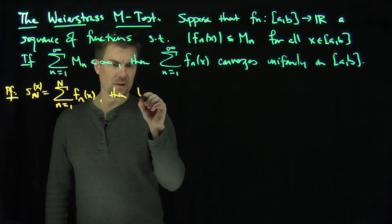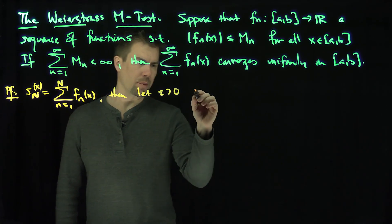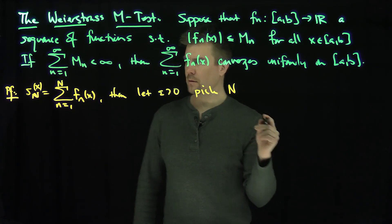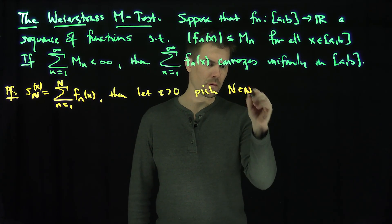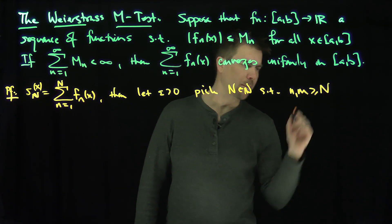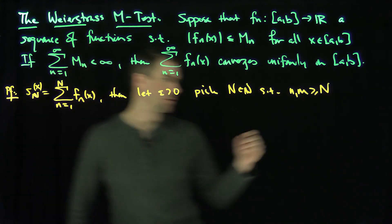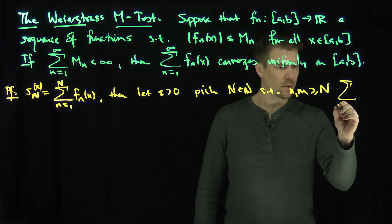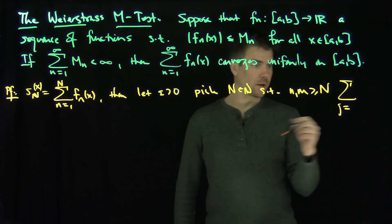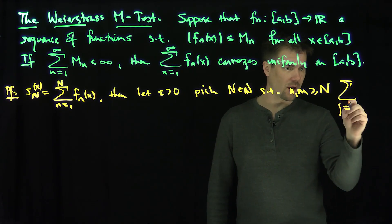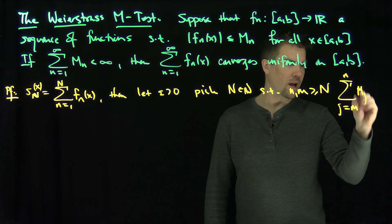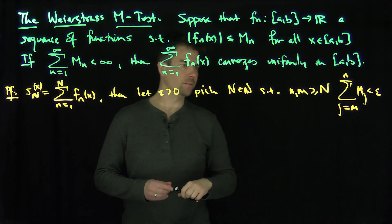Then, let epsilon be greater than 0, and pick capital N in the natural numbers such that if n and m are bigger than or equal to capital N, we have this result: the sum from j=m to n of m_j is less than epsilon.